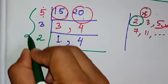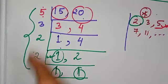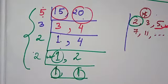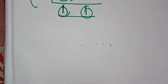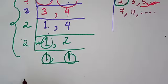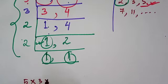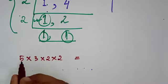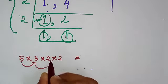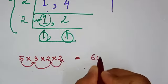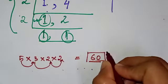This is your answer. If you multiply these prime numbers, you will get the LCM of these two numbers. So 5 into 3 into 2 into 2—if you multiply this one, 5 times 3 is 15, 15 times 2 is 30, and 30 times 2 is 60. So 60 is the LCM of 15 and 20.